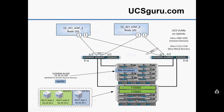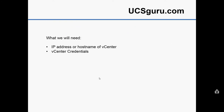Essentially we're going to be configuring our VPCs from our Fabric A UCS, our VPC from our Fabric B, we're going to integrate the VMware environment, create an application, and then we're also going to integrate one of the UCS bare metal blades. We will need the IP address or hostname of our vCenter along with the vCenter credentials.